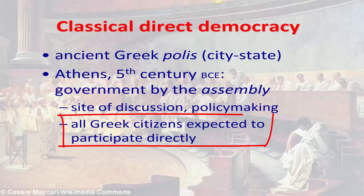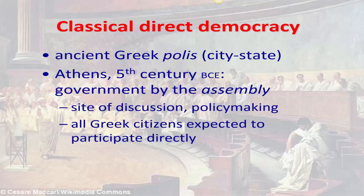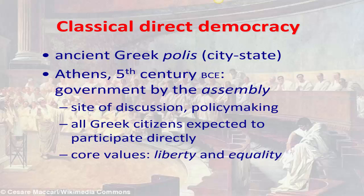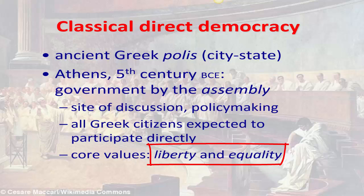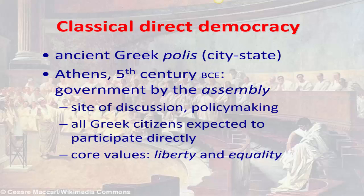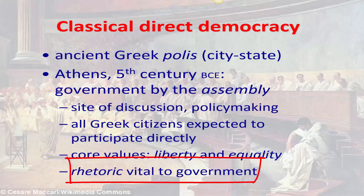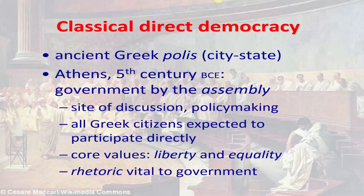All Greek citizens were expected to participate directly in the assembly, which met approximately 40 times a year. Citizens would come to the assembly, listen to arguments, and vote on public policy. This was motivated by the core values of liberty — individual freedom — and equality. All Greek citizens had a say and a vote in public policy. This was a direct response to earlier forms of government where the most rich, powerful, and influential families made all the decisions. In this form of government, if you were a citizen, you were free to make your own choices, had certain rights, and everyone had an equal shot at contributing to their government. Because of this equal opportunity, rhetoric — persuasive communication — was vital to government.